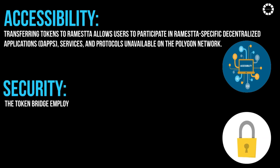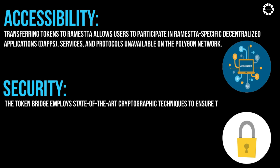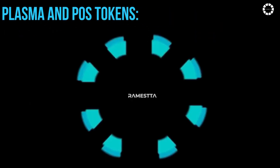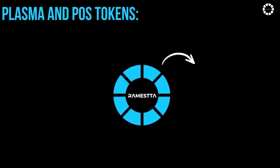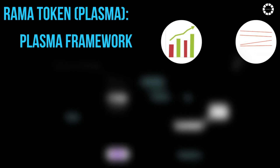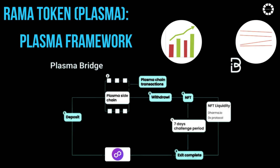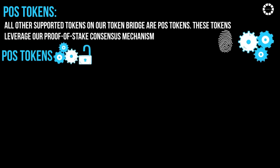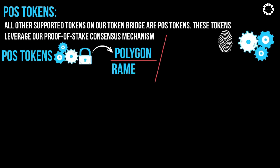Security: The token bridge employs state-of-the-art cryptographic techniques to ensure transactions are secure and tokens are transferred safely between Polygon and Romesta. In Romesta infrastructure, two types of tokens are supported: Plasma tokens and Proof-of-Stake tokens. The Rama token operates under the Plasma framework, ensuring high scalability and security, and can be securely withdrawn to the Polygon network via the Plasma bridge. All other supported tokens on the bridge are POS tokens, which leverage the proof-of-stake consensus mechanism, balancing efficiency with security.